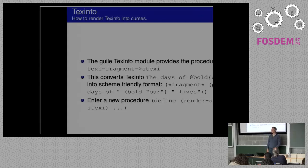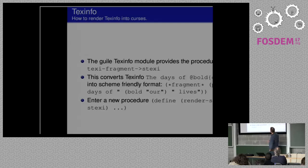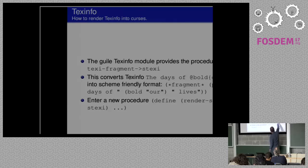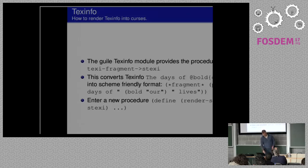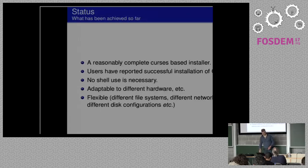Texinfo: we need a system to turn texinfo into something that Curses can display. Those familiar with Guile know there is an existing function called texinfo-fragment->stexinfo, which converts things like bold text in texinfo into something more Scheme-friendly — for example, a paragraph with bold sections represented as structured data. I had to write a new procedure to actually turn this into something that Curses will play nicely with.